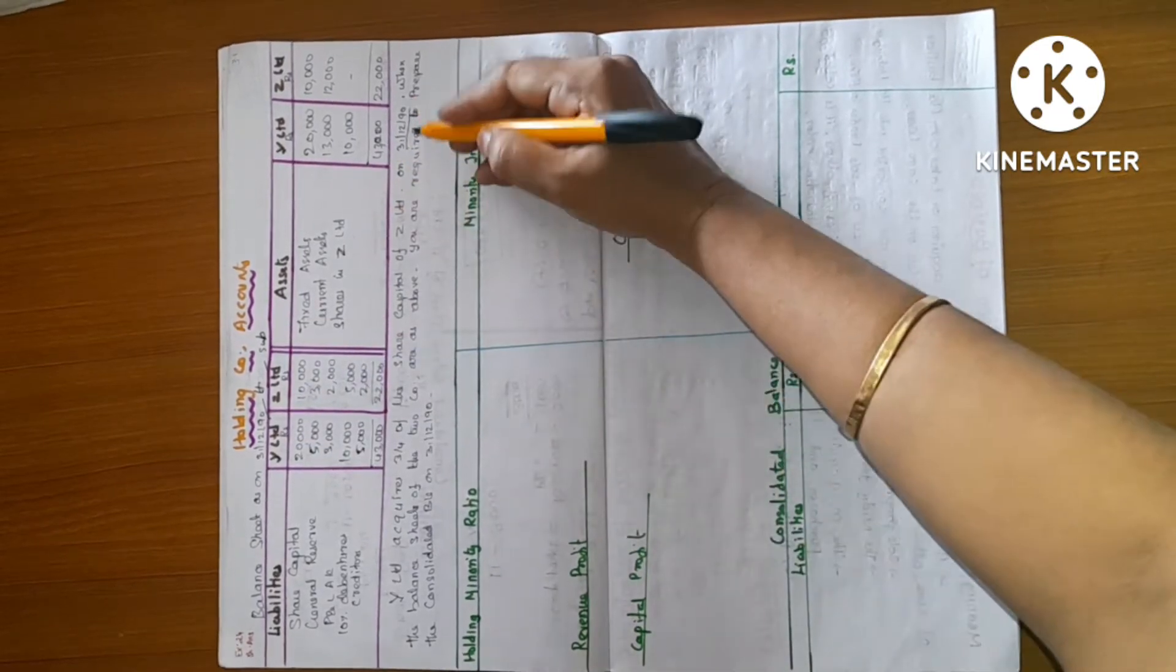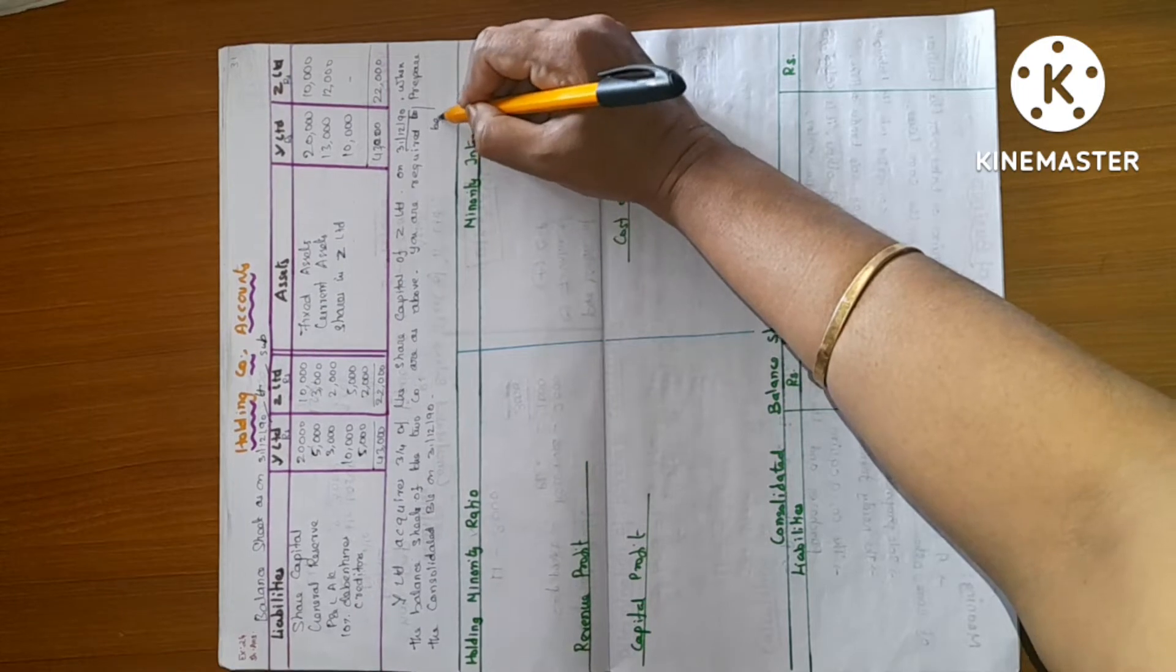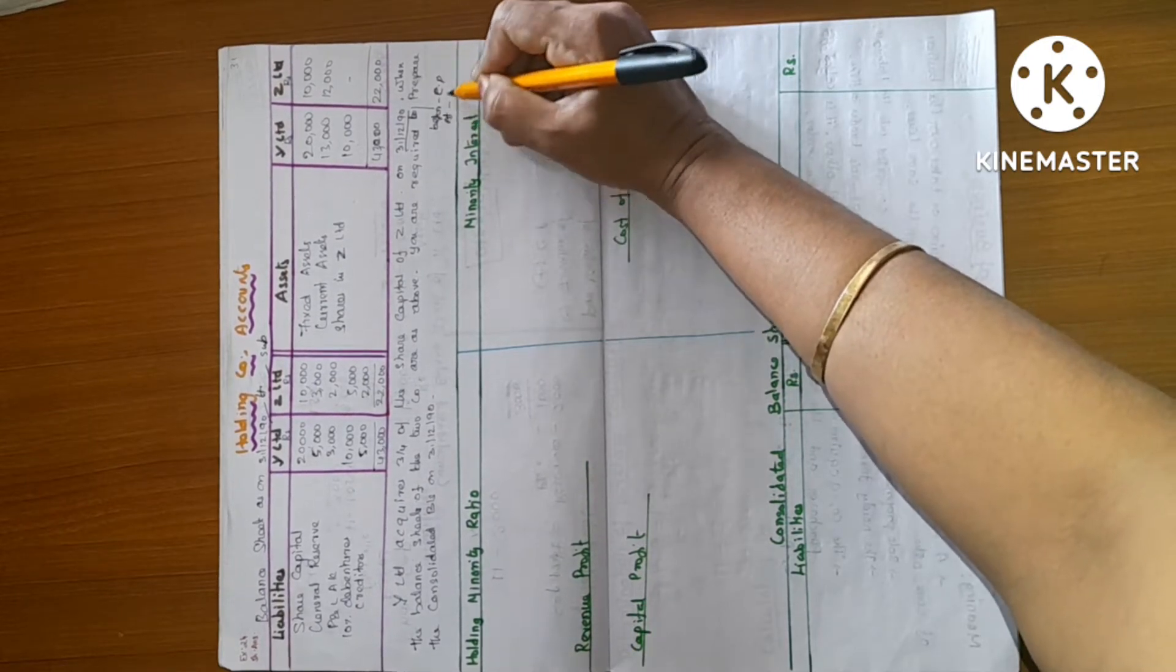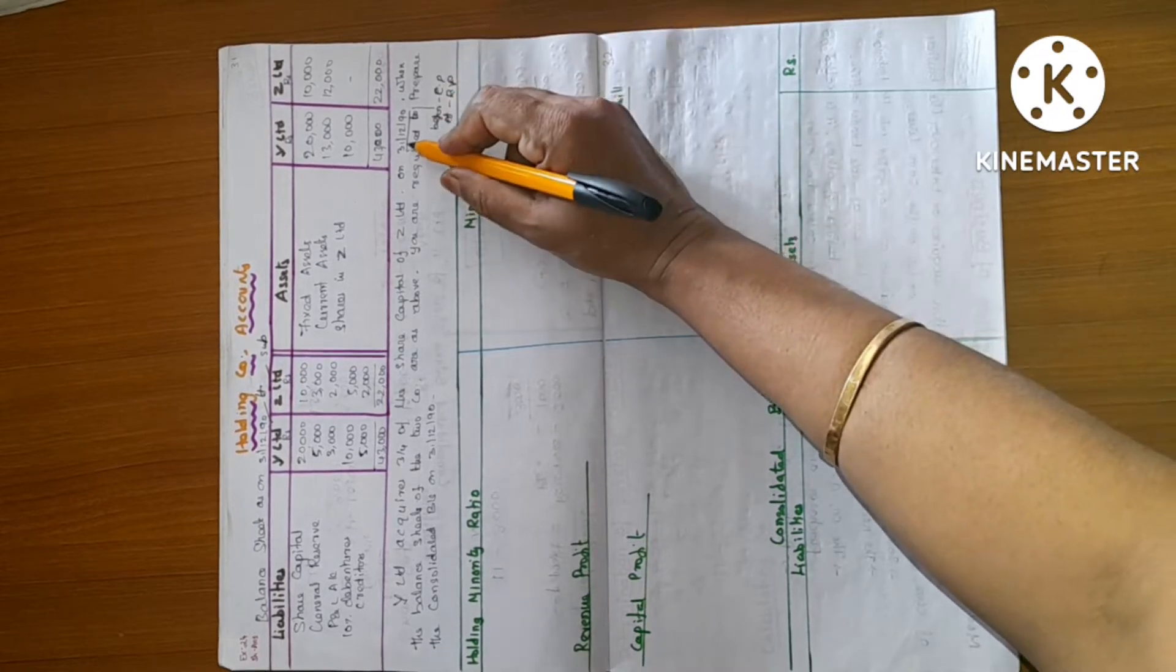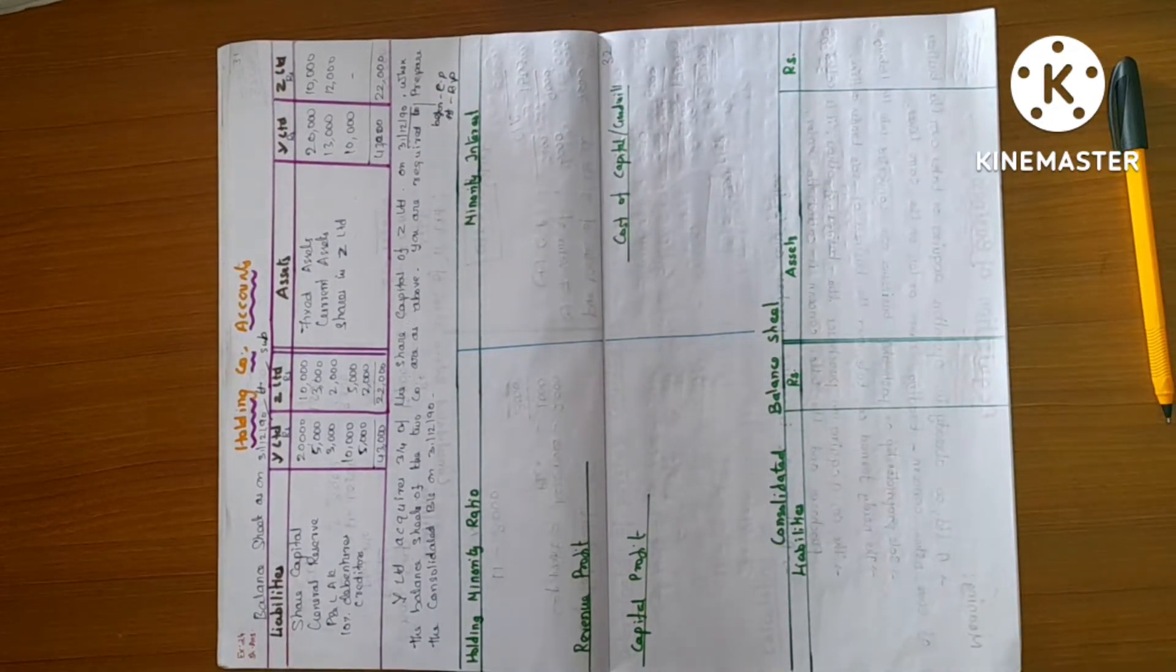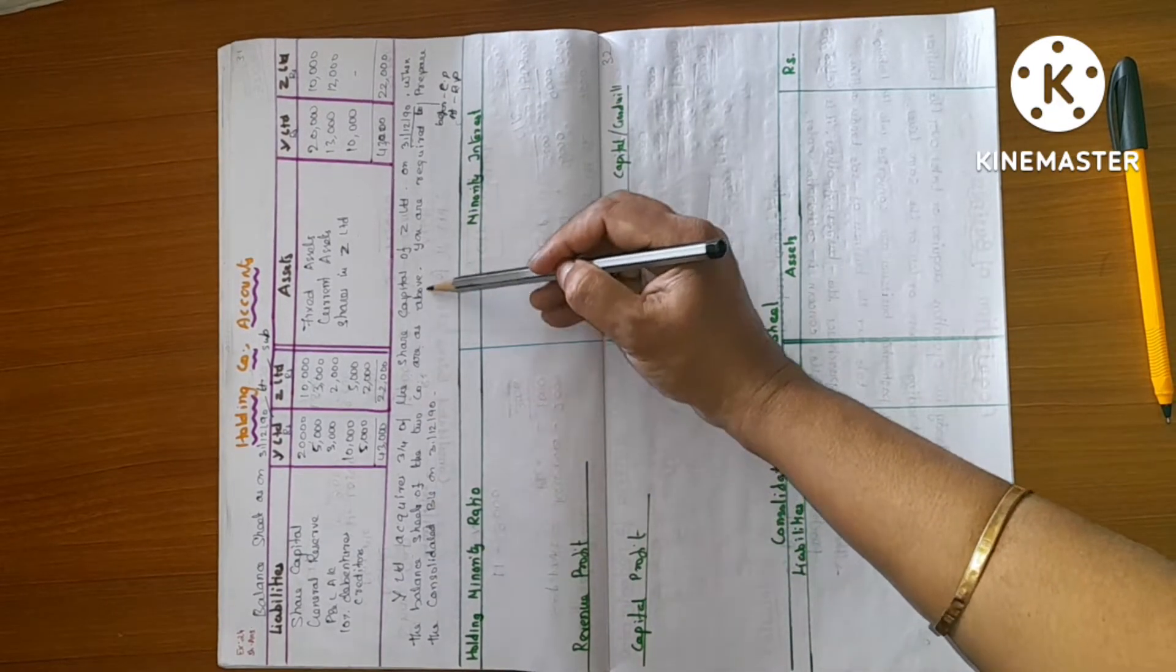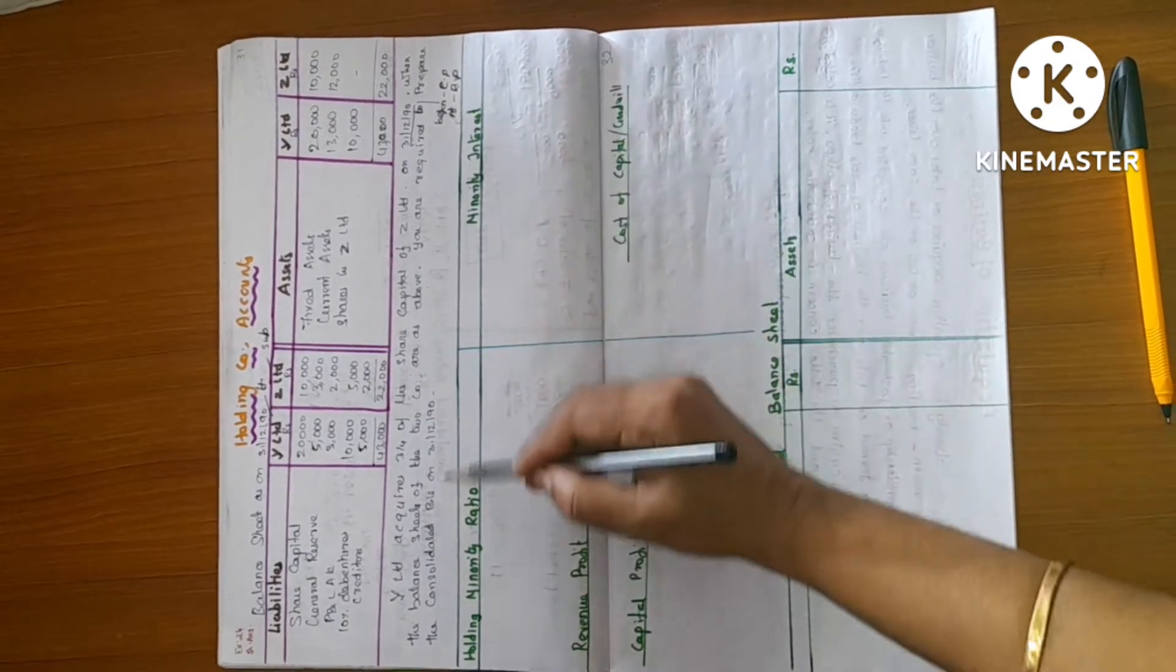We have the last period of 2,000. We have the capital profit. After capital profit, we have the revenue profit. Now, when we have the date of 2 companies, we are the capital profit.